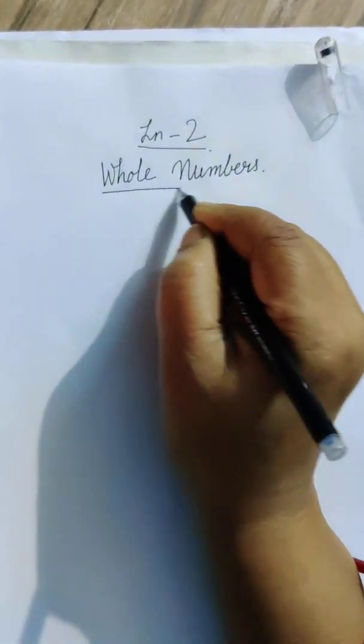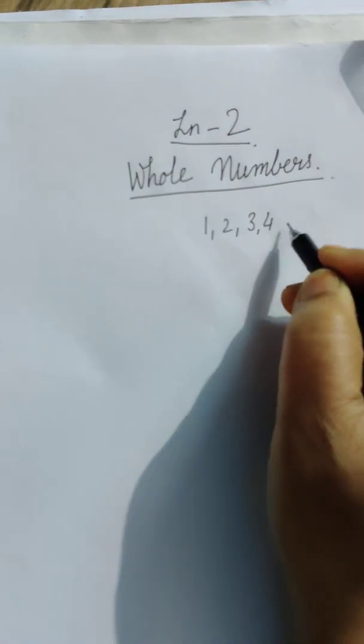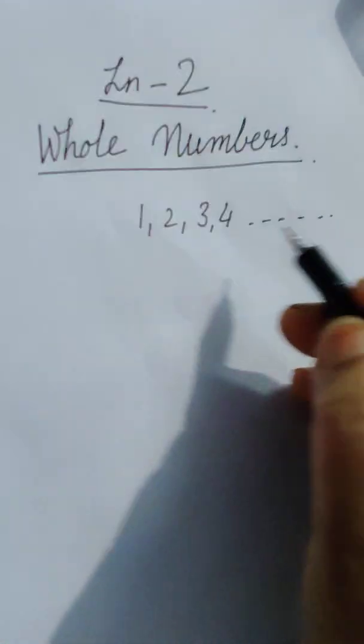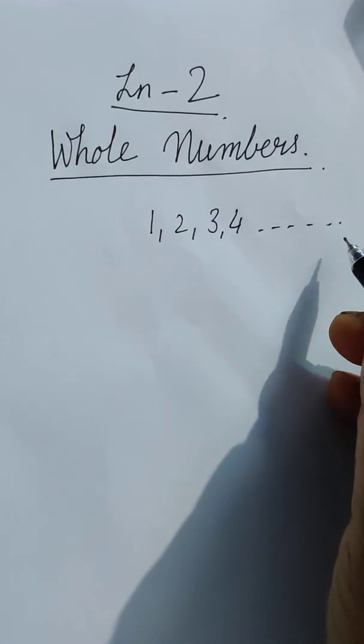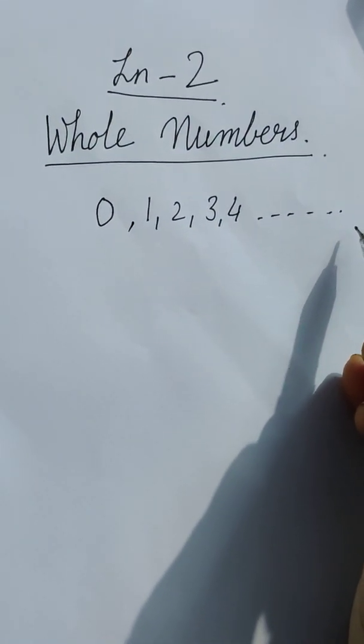As we all have studied that 1, 2, 3, 4 and so on, these are all called natural numbers. When a 0 is added to this set of numbers, set of natural numbers,